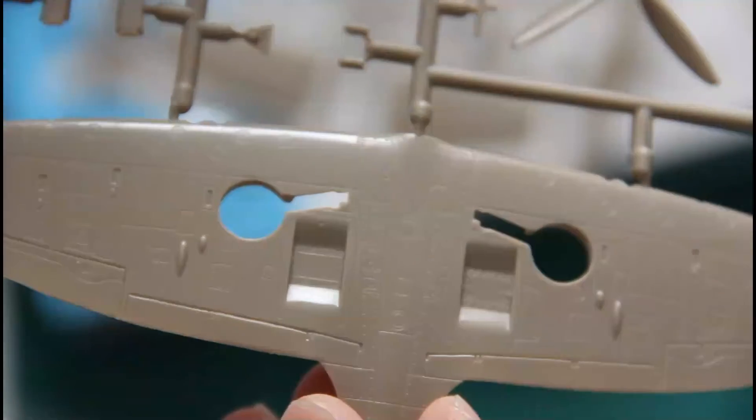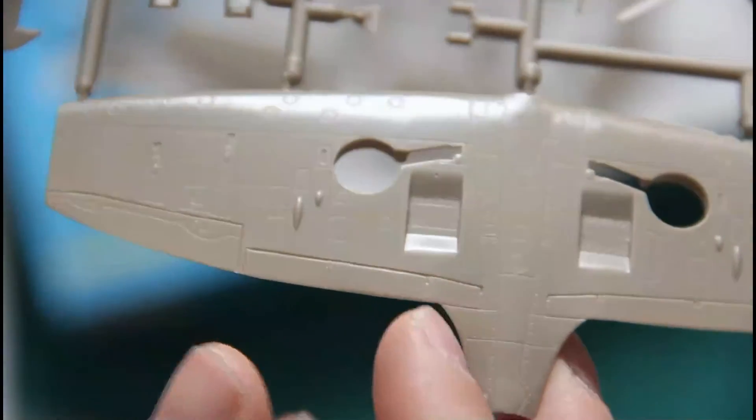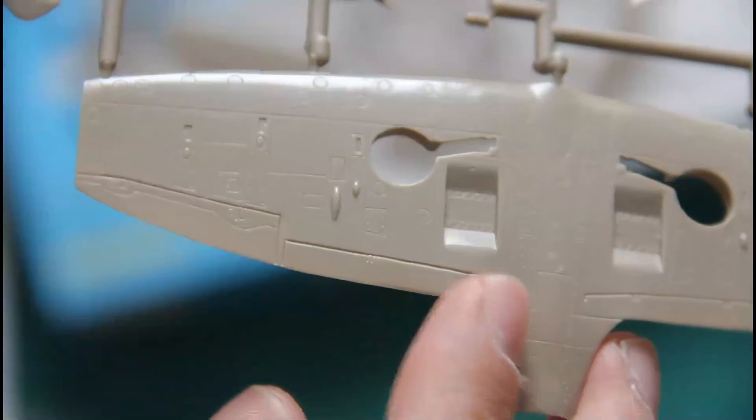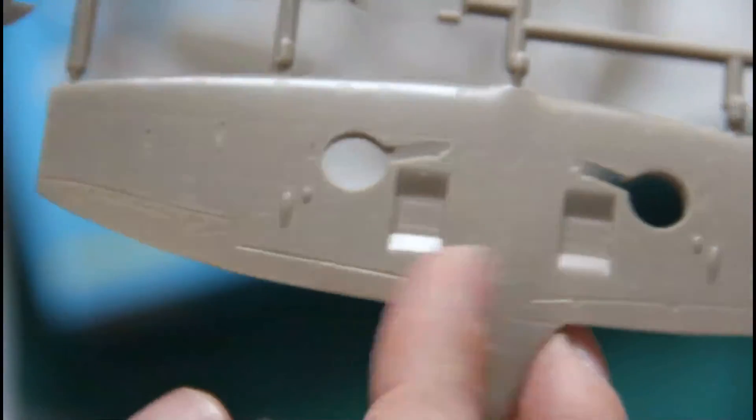And then we have the second sprue, which features the bottom wing part. Again, fully detailized with recessed panel lines, rivets and all. And ailerons and flaps are molded integrally.